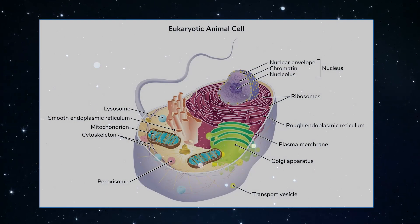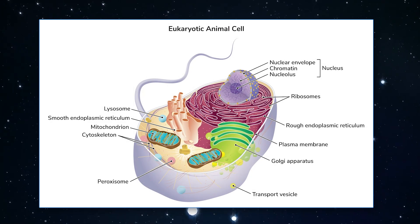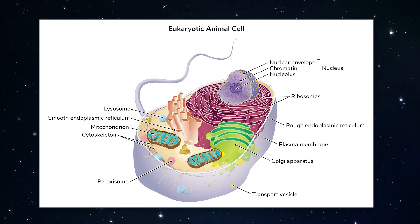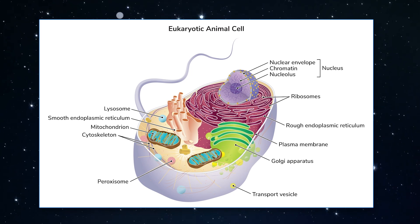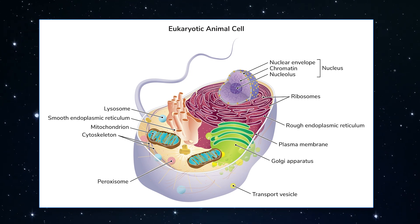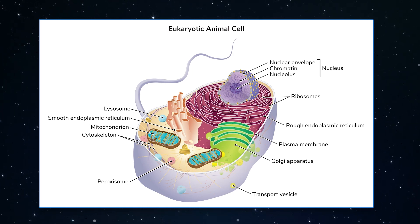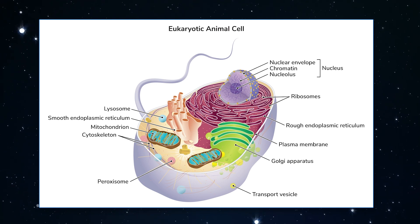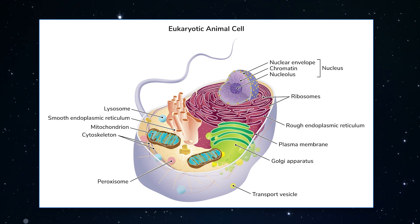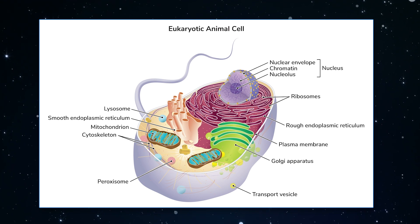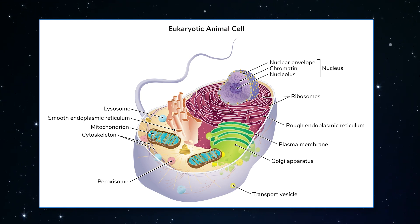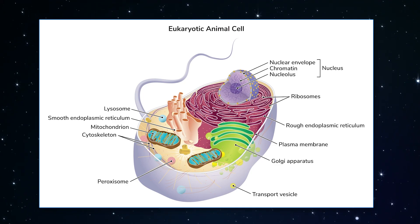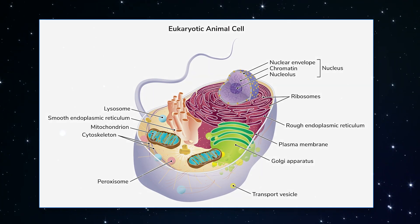Cells are sort of like space stations in that they have many parts with different functions, all vital to the unit as a whole. Like, think of a space station without the support beams or the control panel — pretty useless, right? In this video, we're going to cover some of the structures of the eukaryotic animal cell: specifically, cytosol, the nucleus, ribosomes, and mitochondria. With that, let's take a look inside.